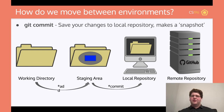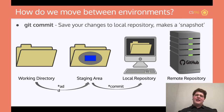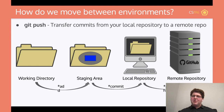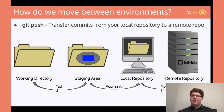A good way to describe this process: the working directory is like your kitchen table. The staging area is where you're packing your lunch — putting everything in the lunch bag ready to go. Committing is wrapping up your lunch ready to go out the door. And then to actually go out the door, we go to the remote repository using git push, which transfers commits from the local repository to the remote repository.